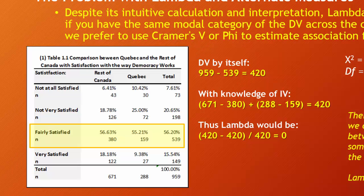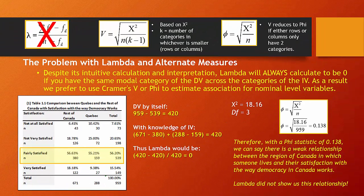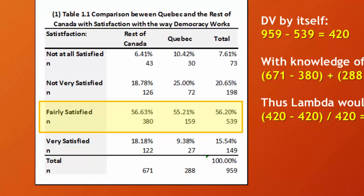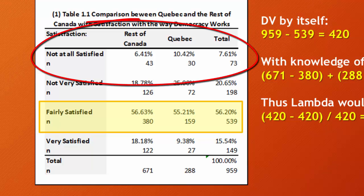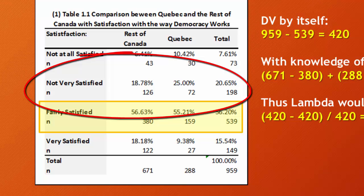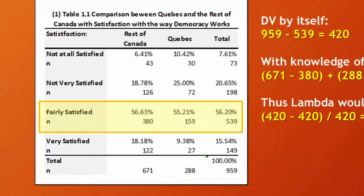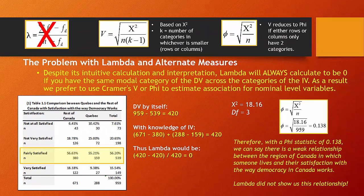As you look at this table, those in Quebec do appear less satisfied with democracy in Canada. In the 'not at all satisfied' category, there's 6.4% in the rest of Canada versus 10.4% in Quebec. There are also more Quebecers who are not very satisfied — 18.78% versus 25% — and fewer Quebecers who claim to be very satisfied. So there do seem to be differences consistent with our hypothesis that those in Quebec are less likely to be satisfied with democracy. The crosstab validates our hypothesis, but our measure of association calculating to zero is problematic.